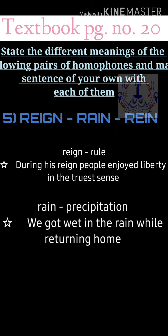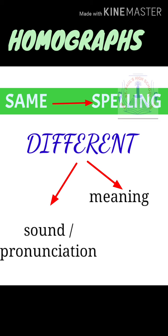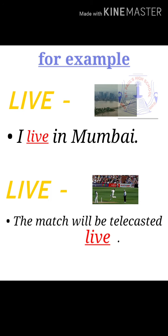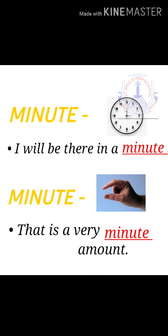Now let us do the second part: homographs. 'Homo' means same and 'graph' means writing or spelling. So homographs are words with the same spelling but different in pronunciation as well as meaning. For example: 'live' — 'I live in Mumbai' versus 'The match will be telecasted live.' Another example: 'minute' — 'I will be there in a minute' versus 'a very minute amount.'